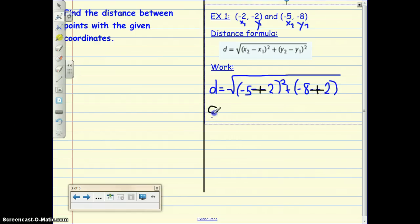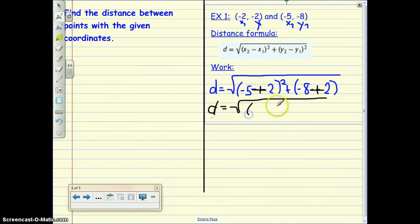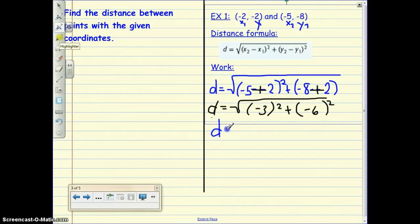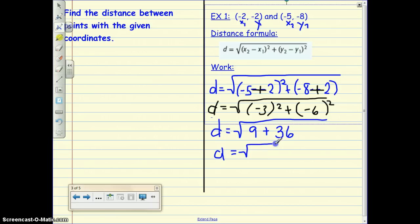So minus a negative we know turns into plus. So our distance is equal to the square root of negative 5 plus 2 is negative 3 squared plus negative 8 plus 2 is negative 6 squared. So, our distance equals, remember we always do exponents first. A negative 3 squared is like negative 3 times negative 3, which is positive 9. Negative 6 squared is like negative 6 times negative 6, which is positive 36.